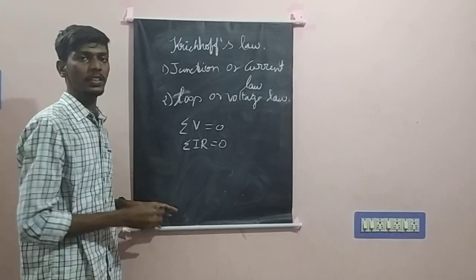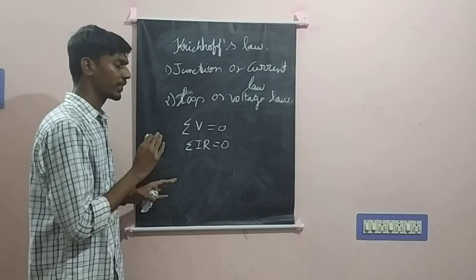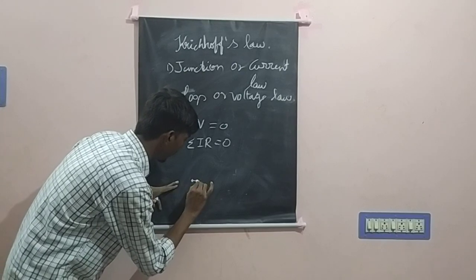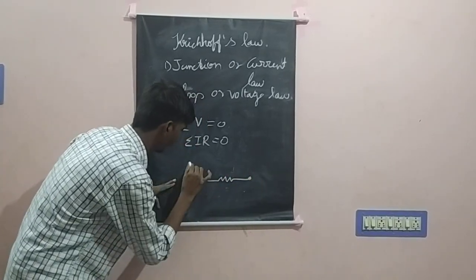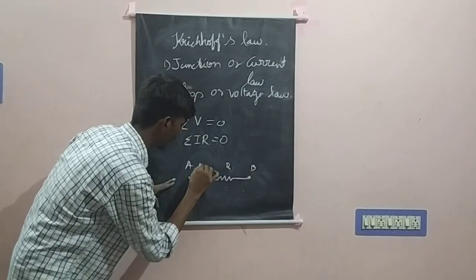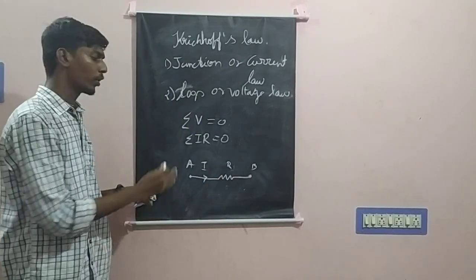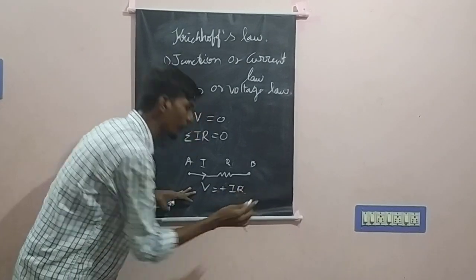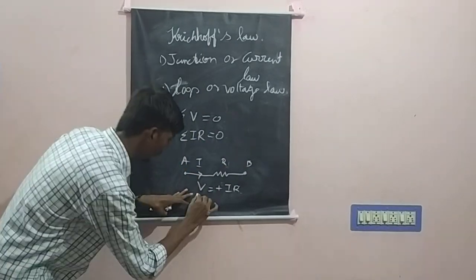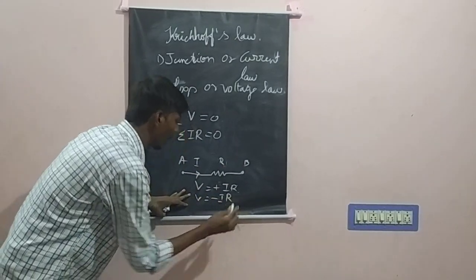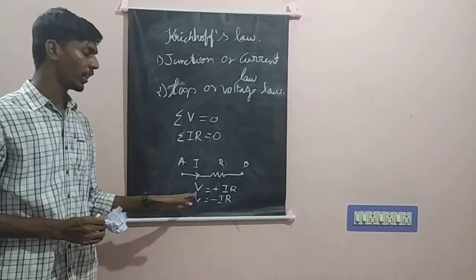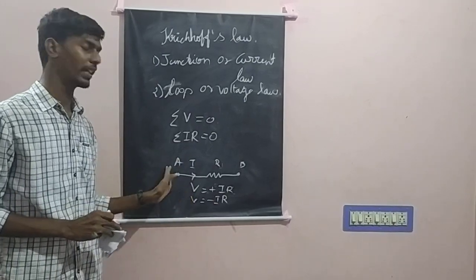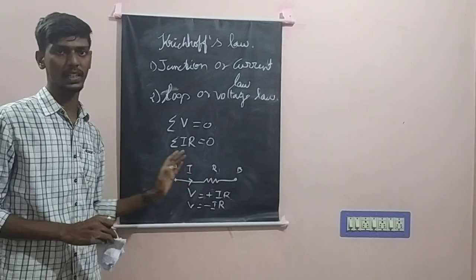In this law, the direction of the potential difference depends on the direction of the current. For example, if the current flows from loop point A to B through a resistance R, and if you consider the loop from A to B, then the potential difference will be plus IR. If you consider the loop from B to A, then the potential difference will be minus IR. So the sign of the potential difference is determined by the direction of the current and the direction of the loop being considered.